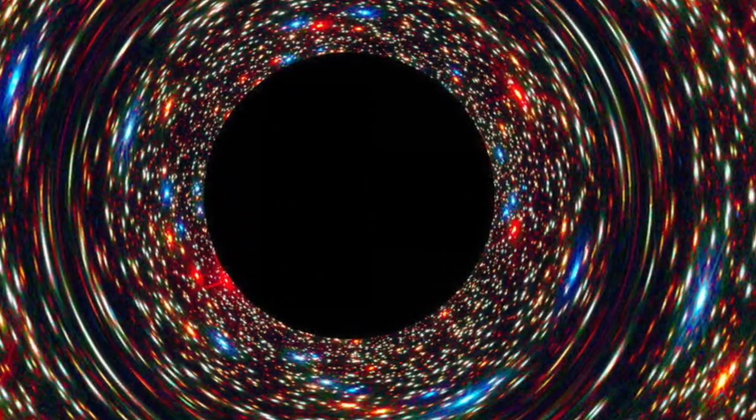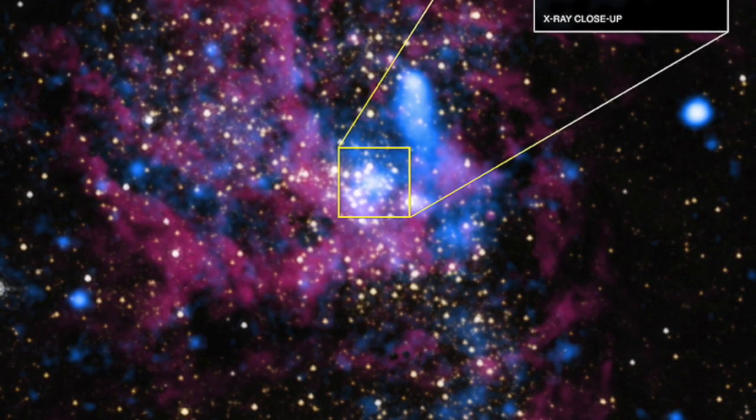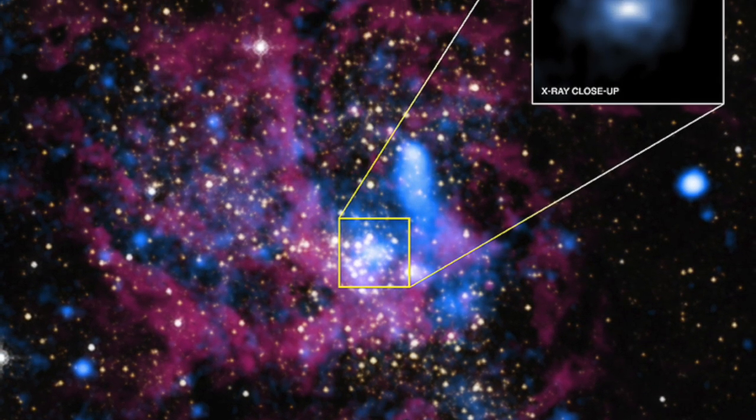Sagittarius A is what scientists call the black hole at the center of our galaxy, and it's huge. It's thought to be 4.6 million times the mass of our Sun.